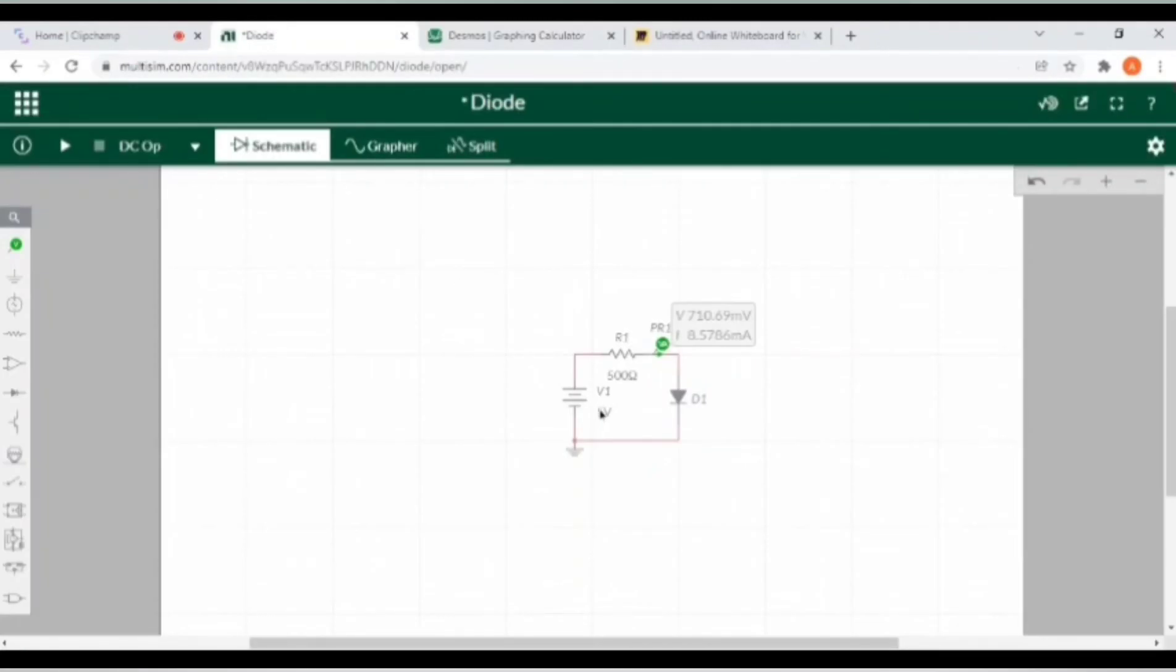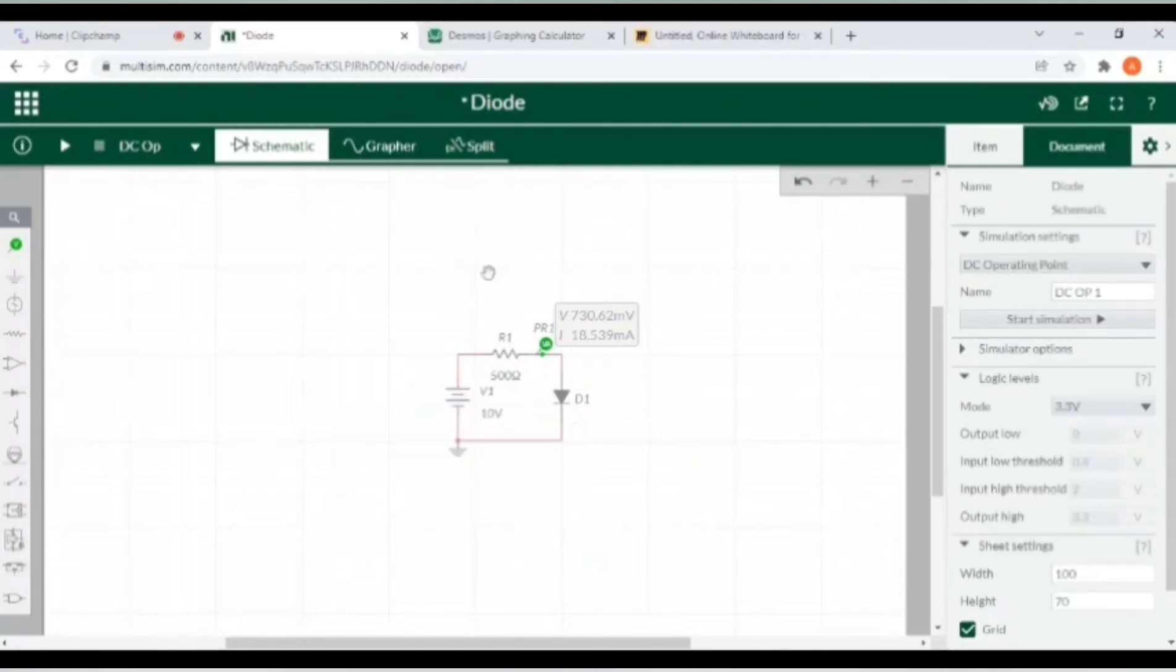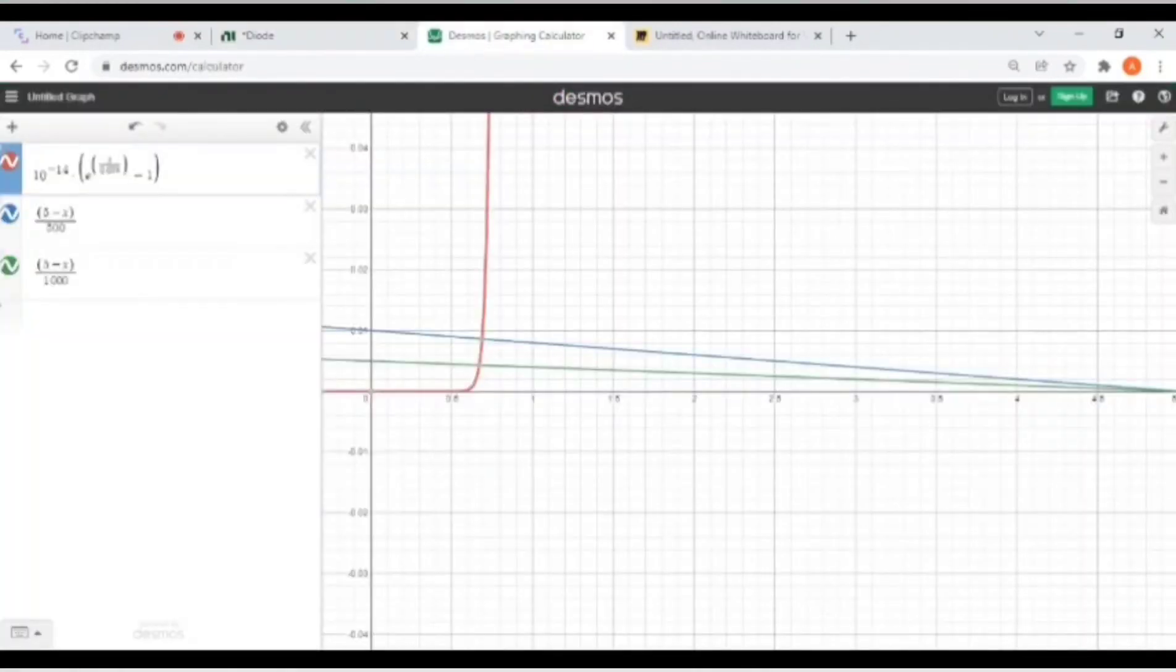Now change the value of voltage source from 5 volt to 10 volts. This will increase the value of current because as voltage increases, the current increases. But you will see the voltage across the diode will remain the same, will remain almost 0.7 volts. There is no further increment in voltage drop across the diode, but the diode current will increase.